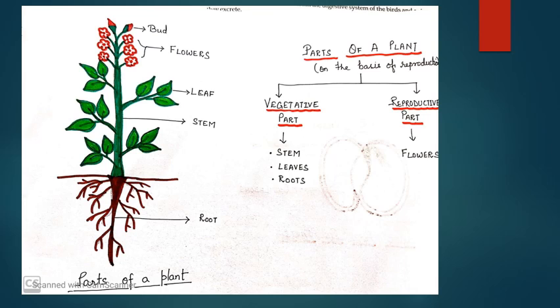So the plant is mainly categorized into two parts if you talk about reproduction. It means they can reproduce through two basic parts. So the first part is the vegetative part. As you can see in the chart in this classification also the vegetative part consists of stem, then leaves and then roots. These three are the vegetative parts of a plant. While the reproductive part of a plant is their flowers.